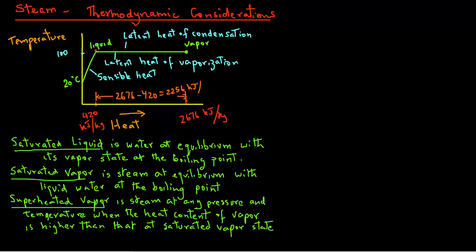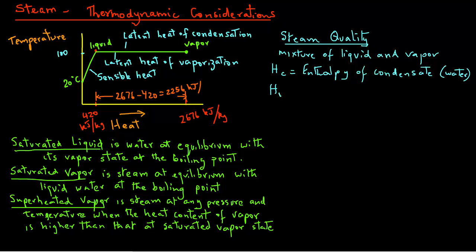The term we use to express the mixture of liquid and vapors in steam is called steam quality. For our calculations, let's use some symbols. We will use H for enthalpy, with subscript C. So HC is the enthalpy of the condensate, where condensate is essentially water, and HV is the enthalpy of vapors. Another symbol is small letter X with subscript S.